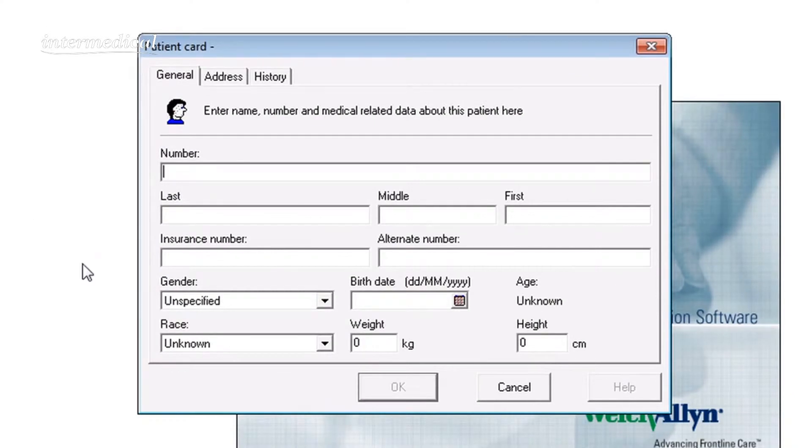When the patient record card appears, fill in the patient ID number, NHS or other, the last name, the first name, the gender, and the birth date.